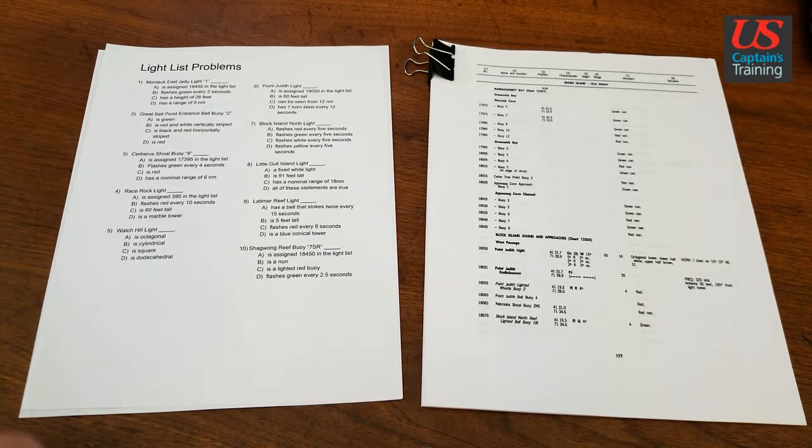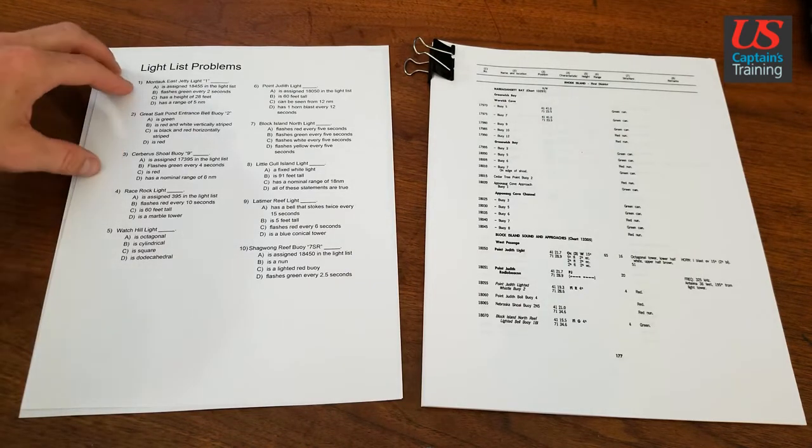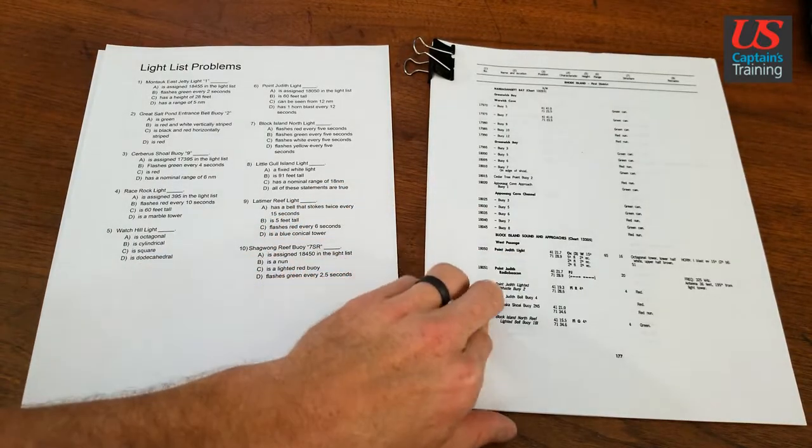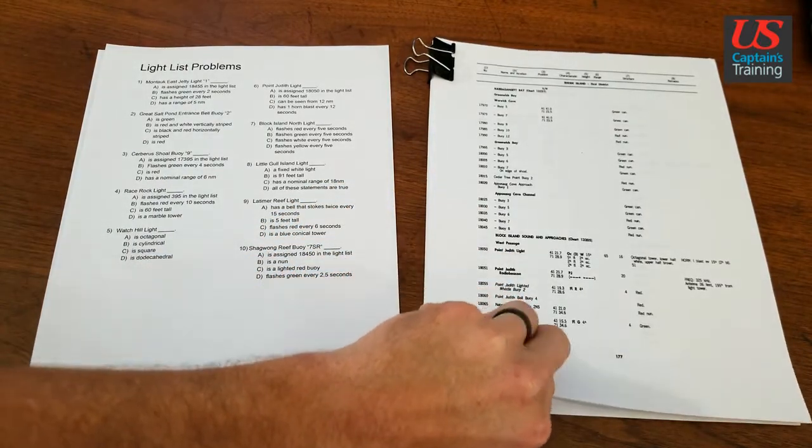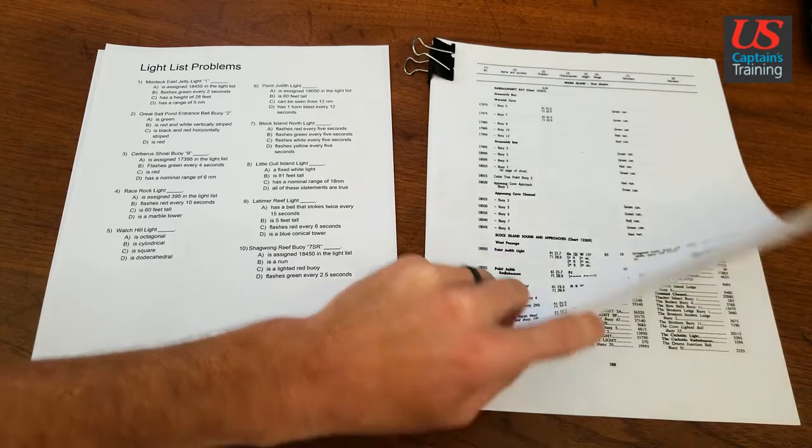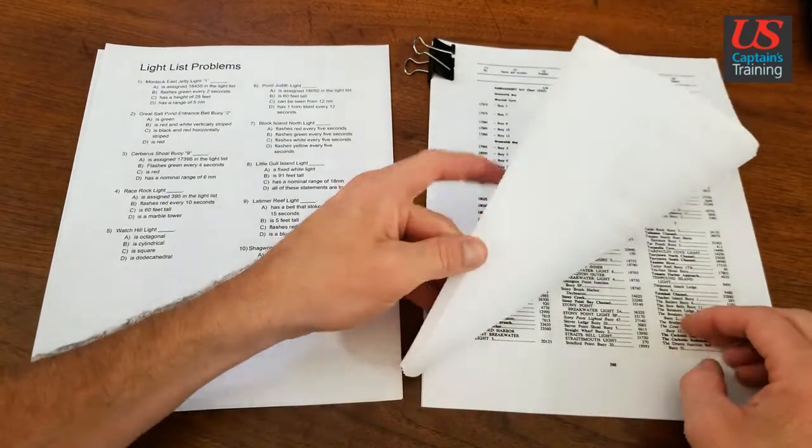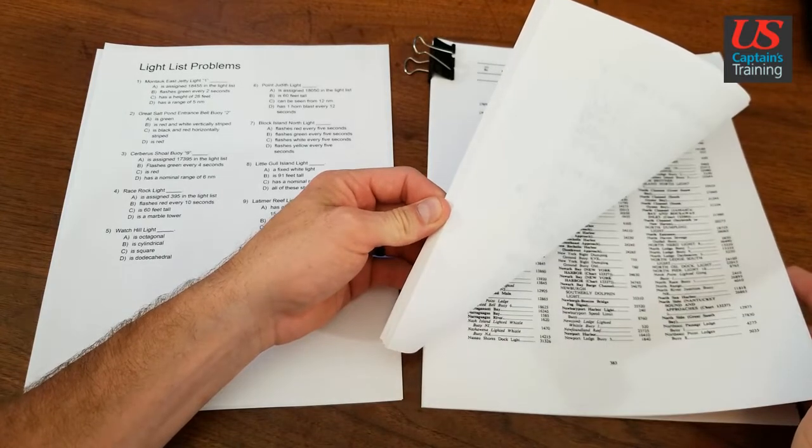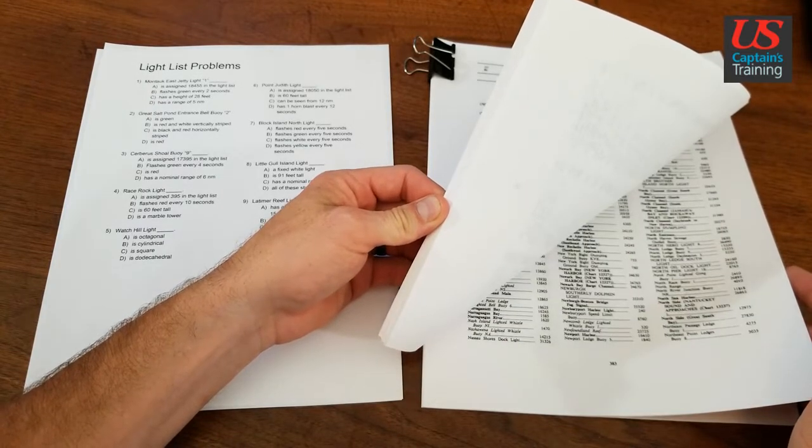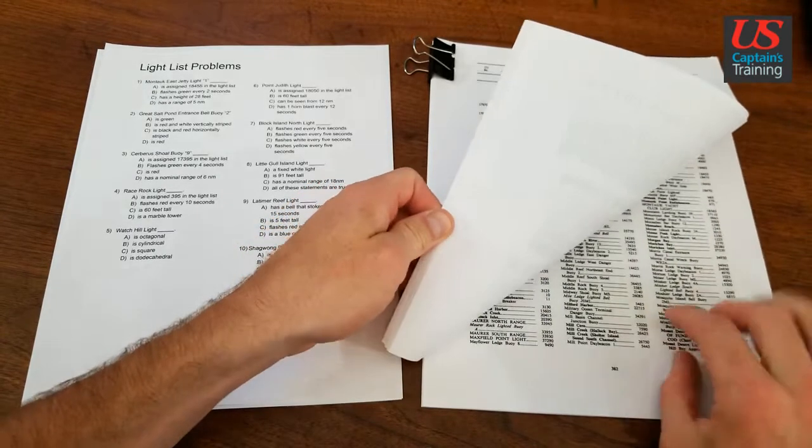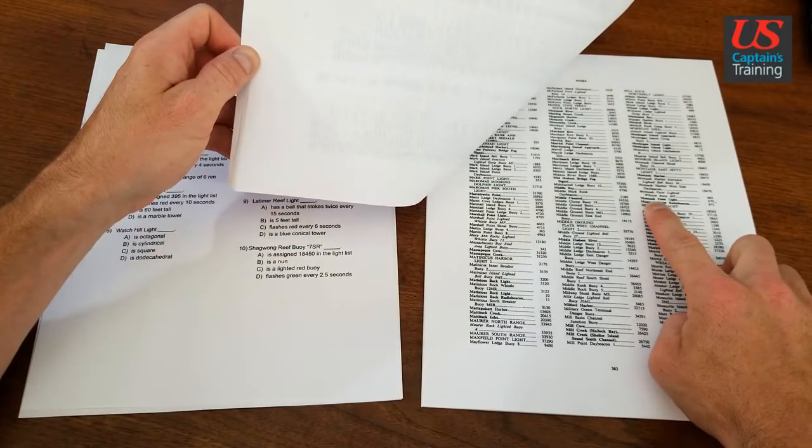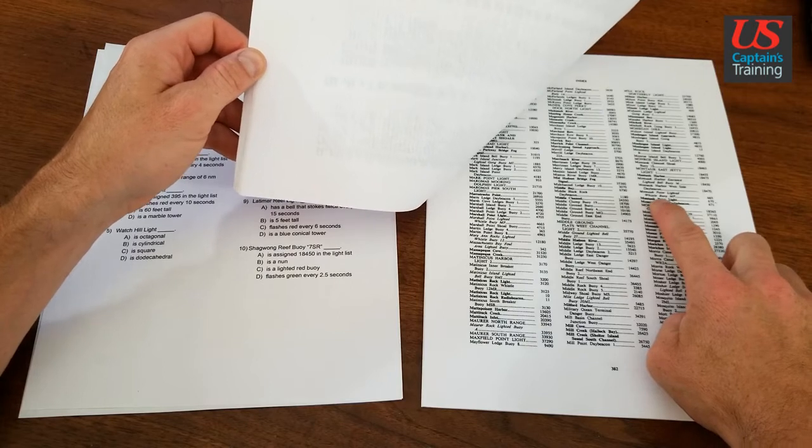Light list problem one: Montauk East Jetty Light One. We go to the light list and look up Montauk East Jetty Light One. We get the M from Montauk, Montauk Point Light.